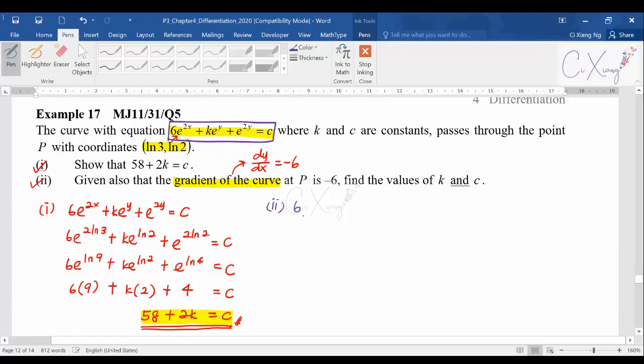So 6 is a constant, you just copy. Differentiate e^(2x), you copy e^(2x) and multiply with 2. Then plus ke^y - k is constant, just copy. When you differentiate e^y, because this is related to y you have to put dy/dx at the end. Then plus differentiate e^(2y), you get 2e^(2y) and you need dy/dx at the end. Equals c is a constant, so if you differentiate c you get zero.